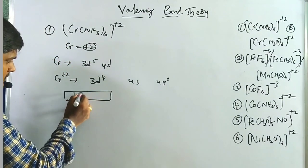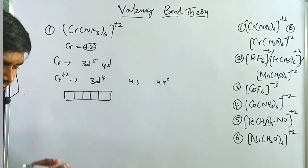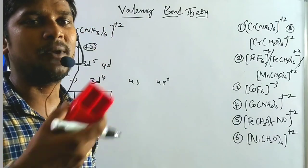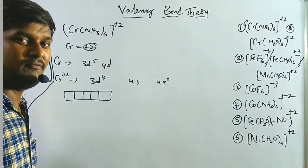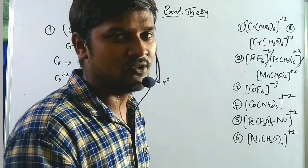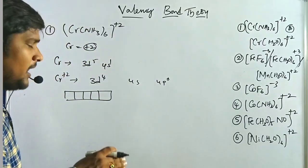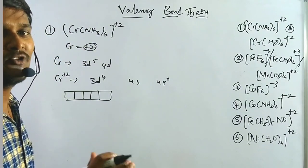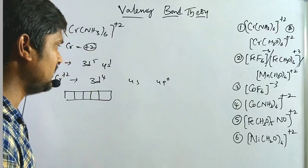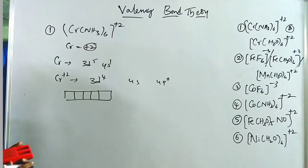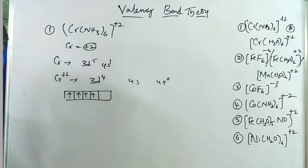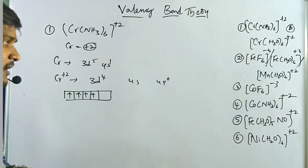The 3d orbital now has 4 electrons. In the presence of strong field ligands, electron pairing takes place. In the presence of weak field ligands, electrons follow Hund's rule — pairing only after half-filling. Here NH₃ is not a strong field ligand, so electron filling follows Hund's rule. We have 4 electrons filled in this manner.